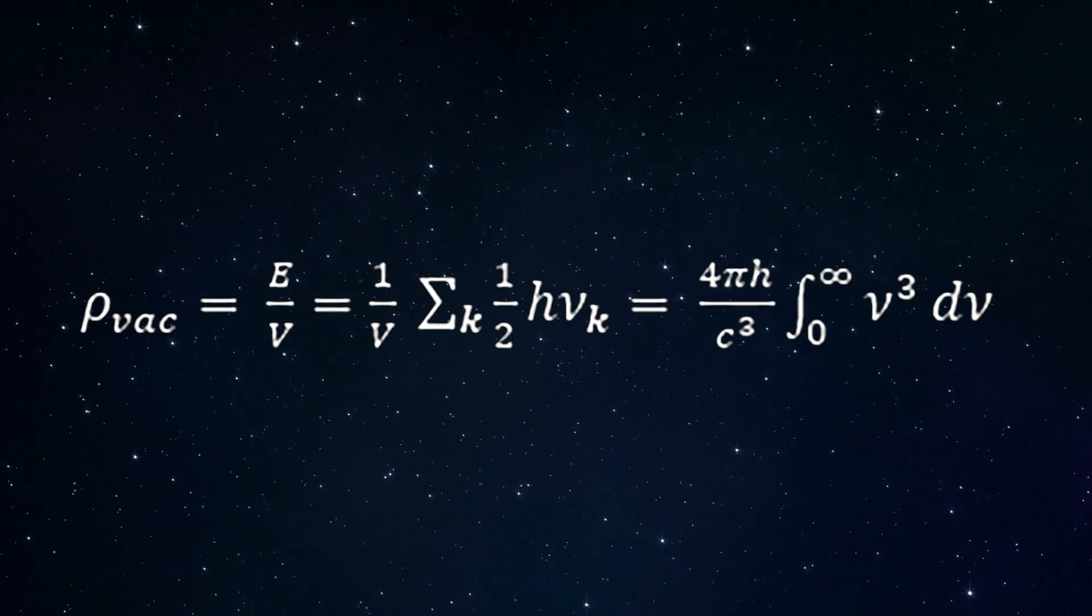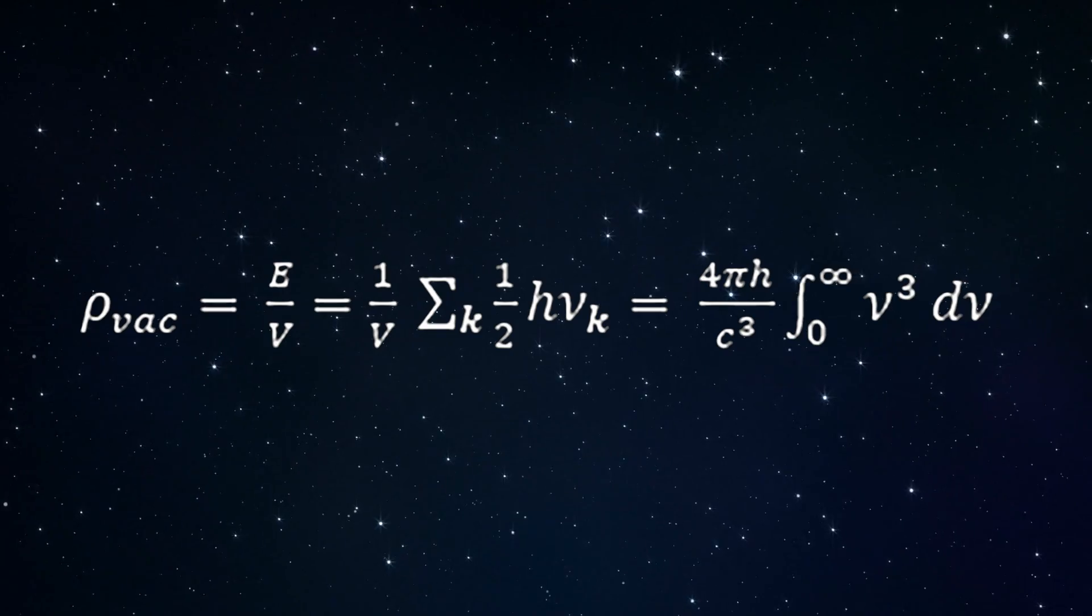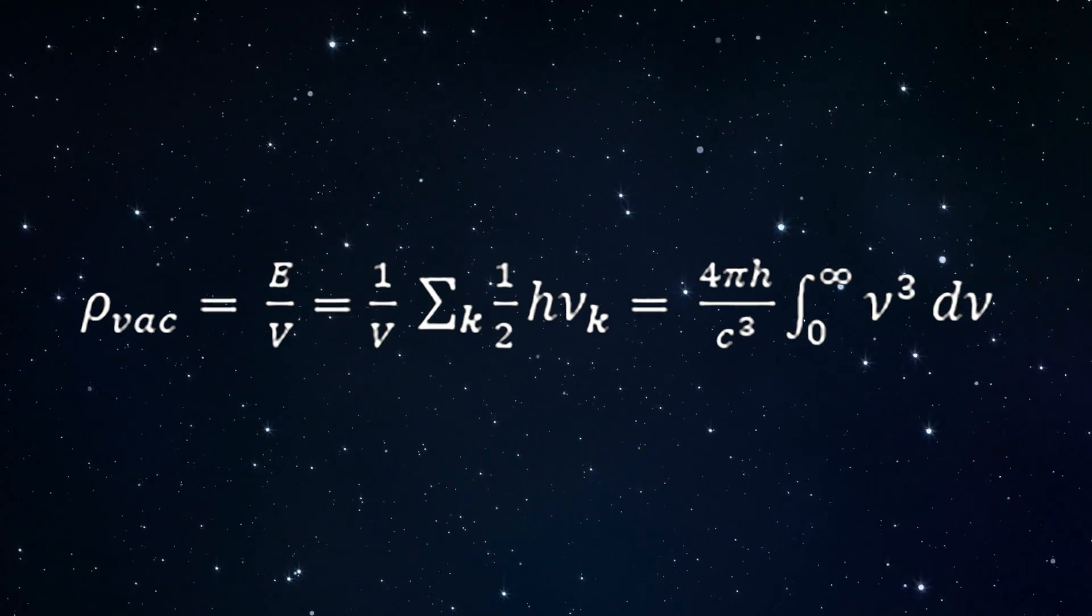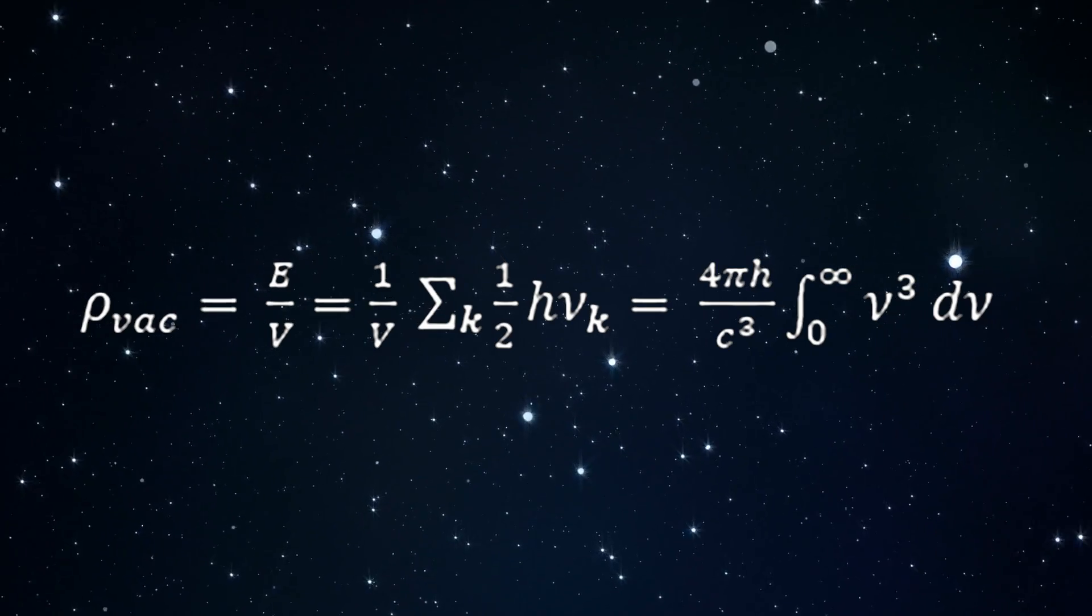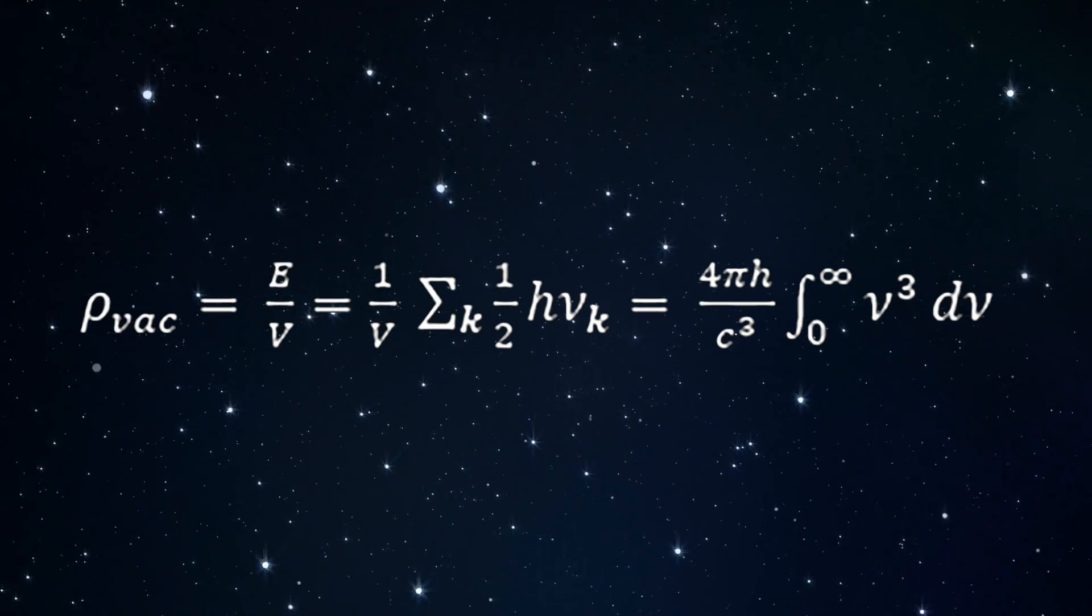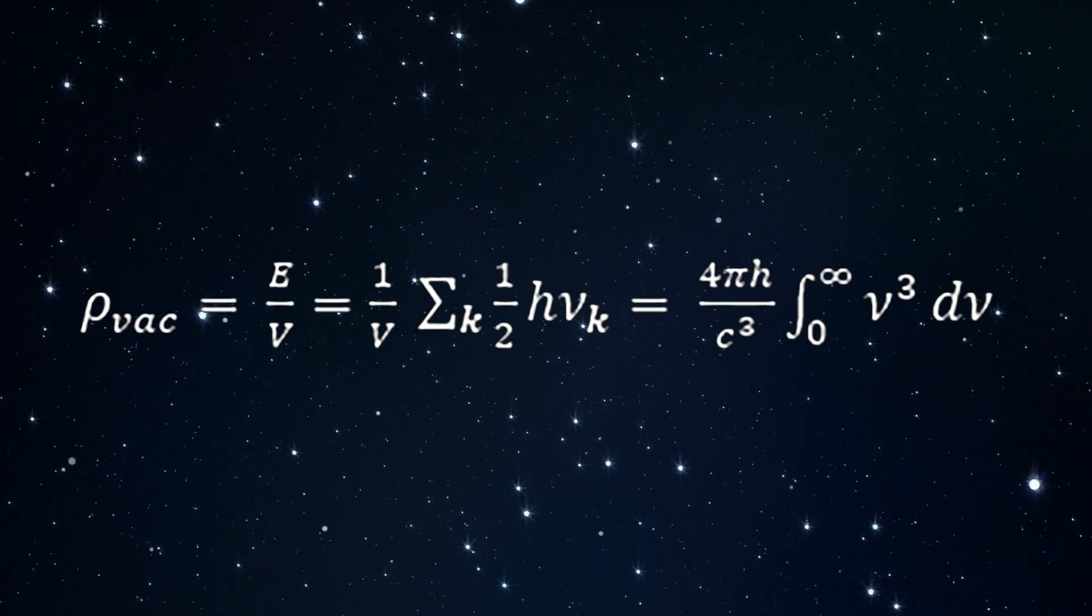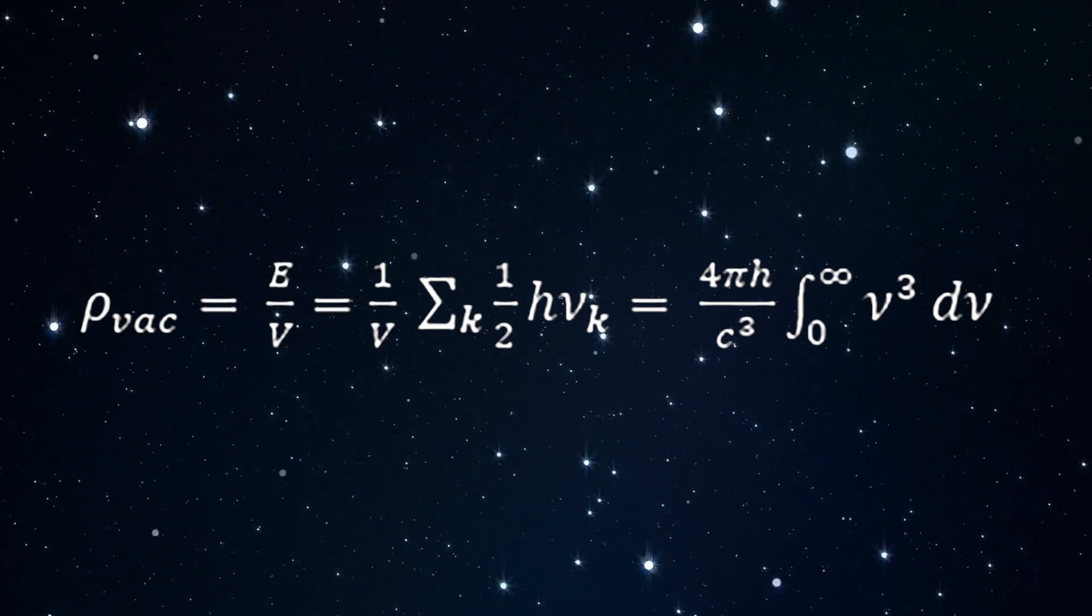The wave vector k signifies the normal modes of the electromagnetic field that are consistent with the boundary conditions on the quantization volume V. As V approaches infinity, one obtains the right-hand side of the equation.